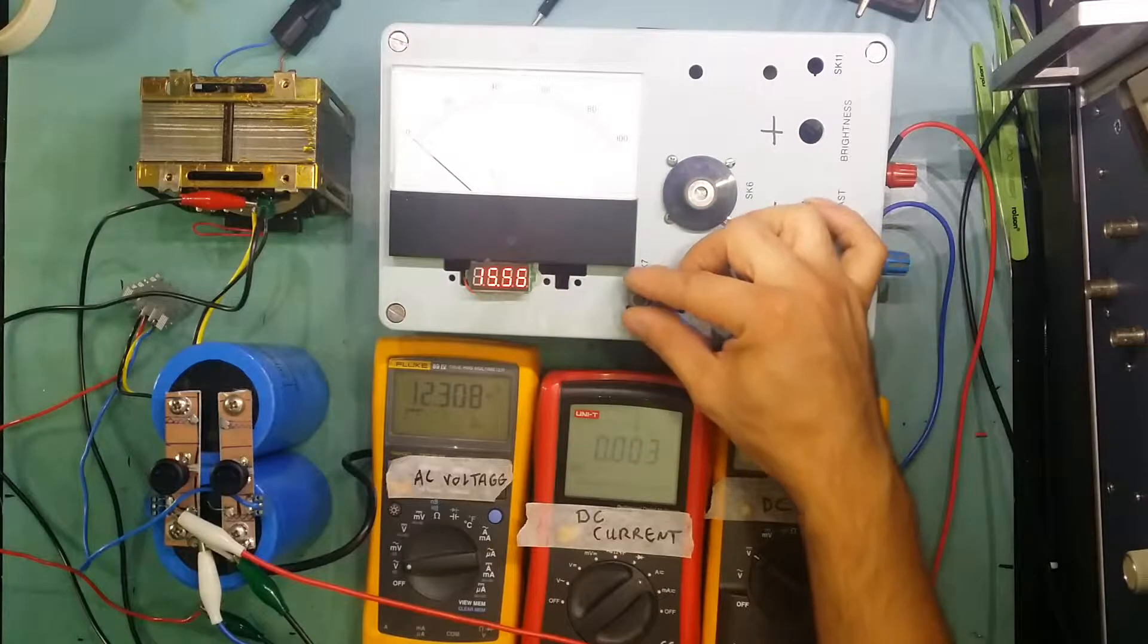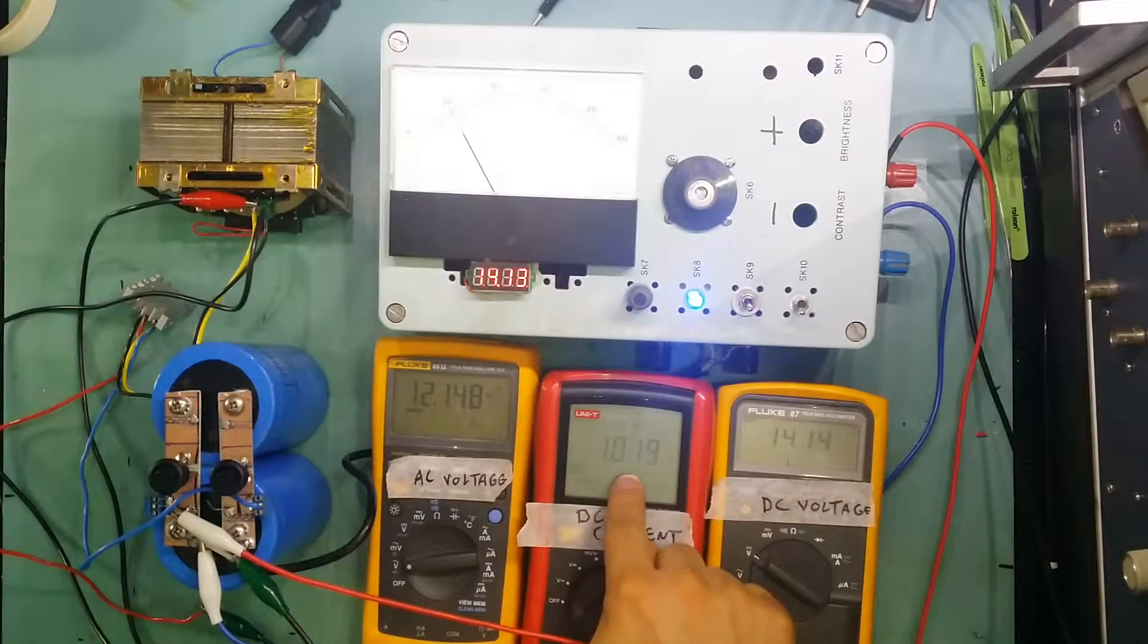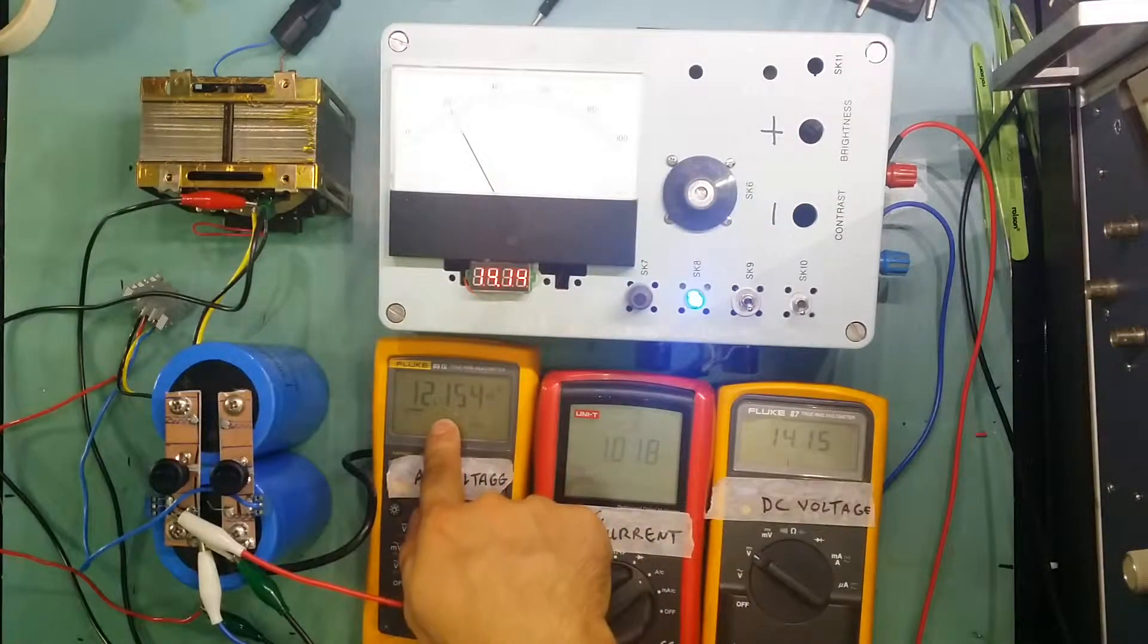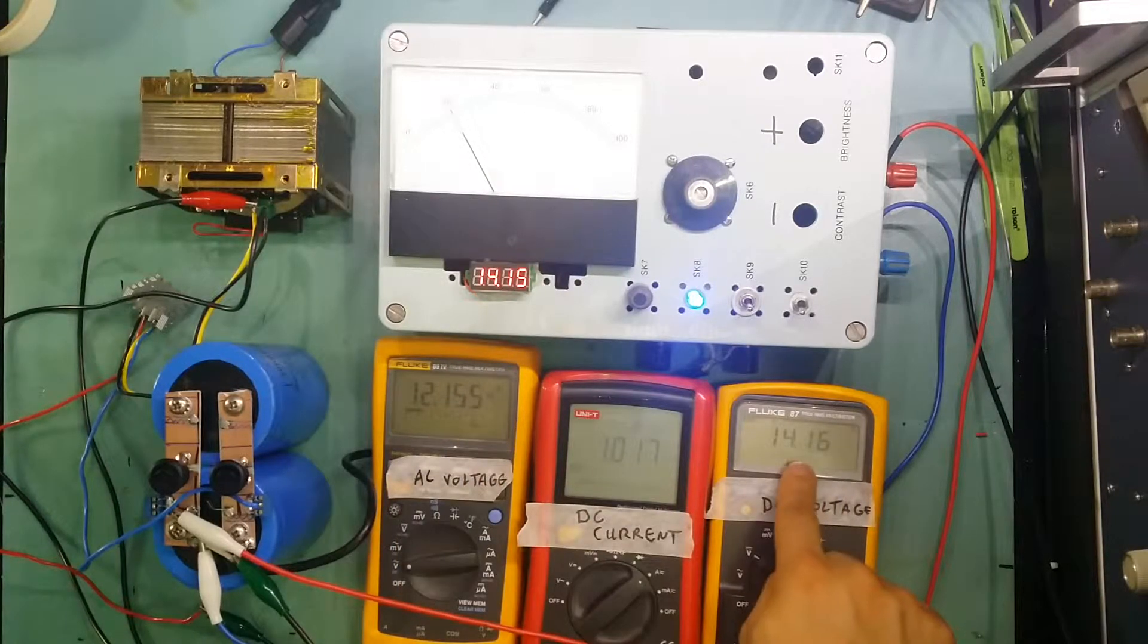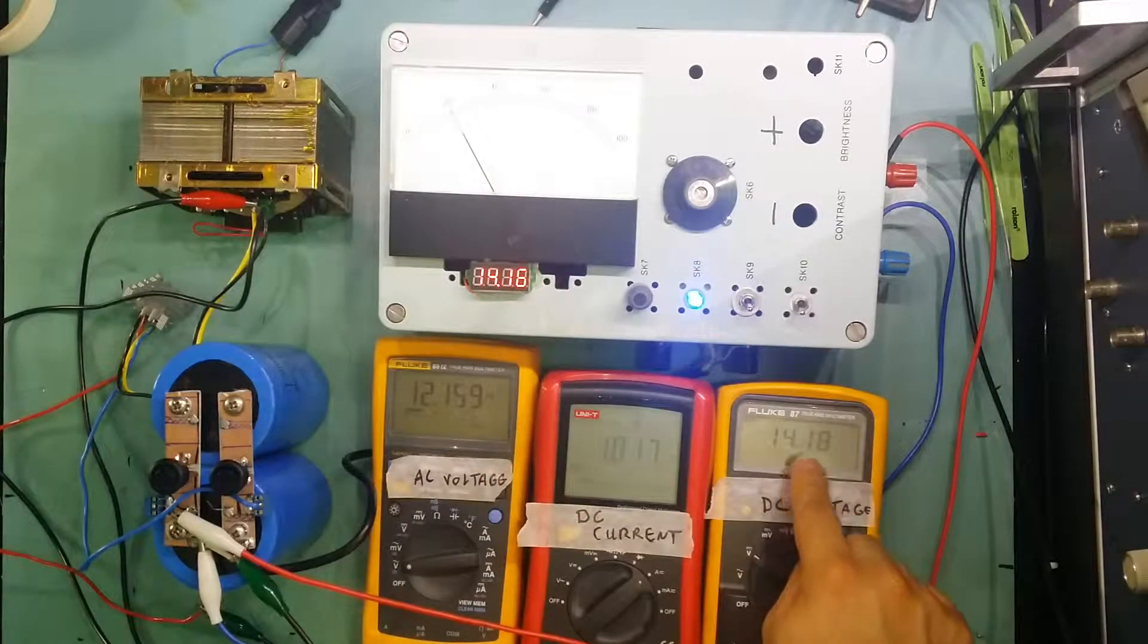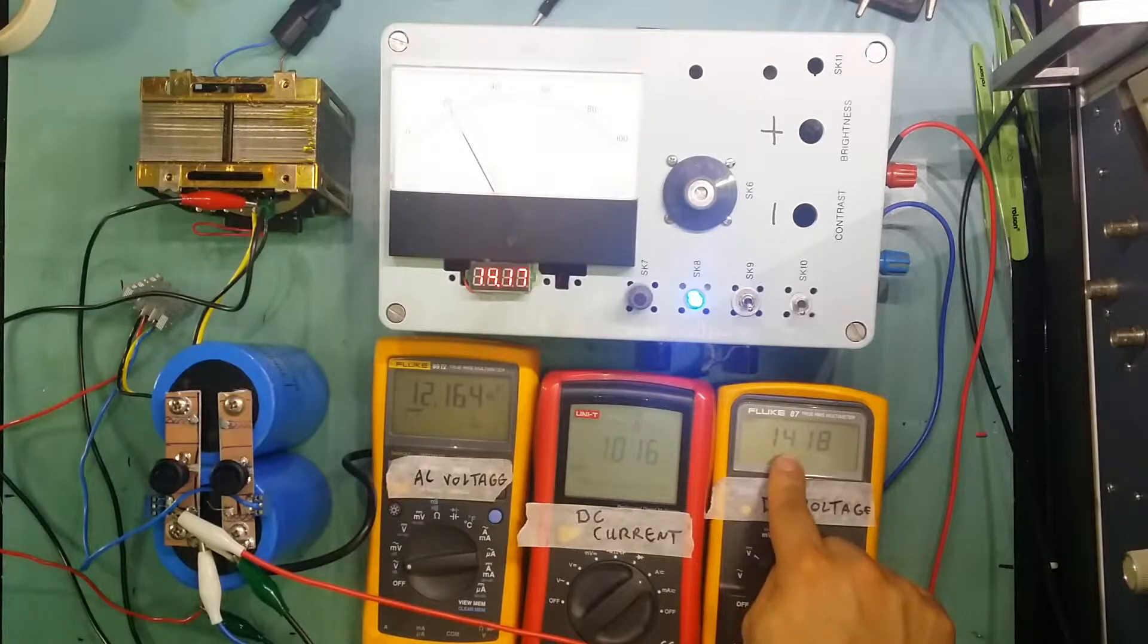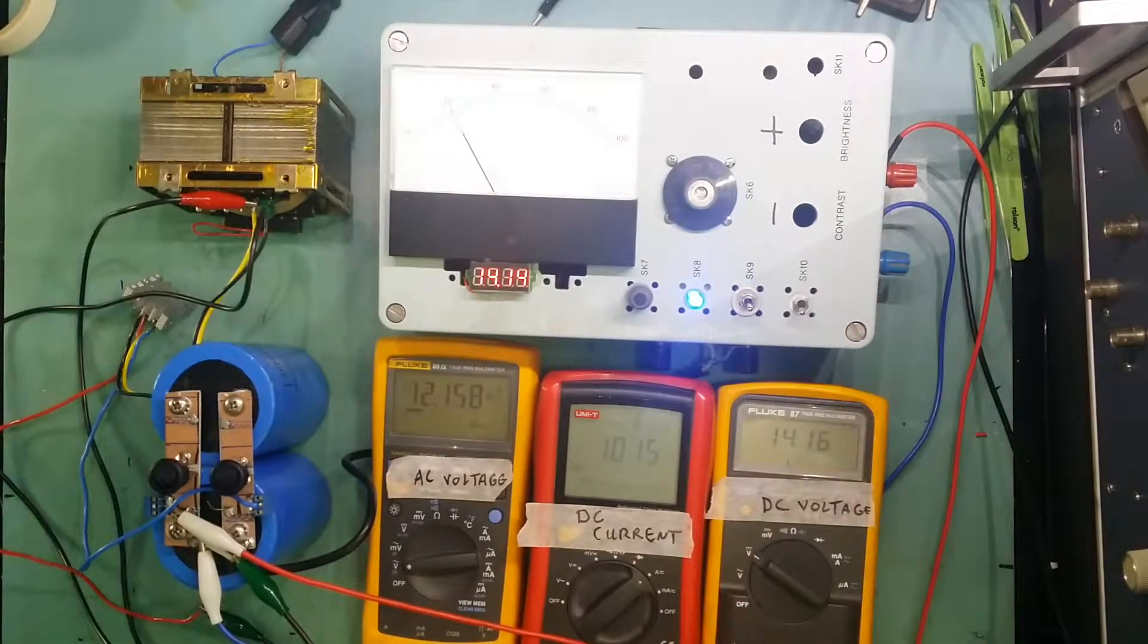So I'm going to turn my dummy load on and start pulling 1 amp. As you can see here 1 amp, the AC side still 12.1, the DC side from 15.5 is going to 14.16.